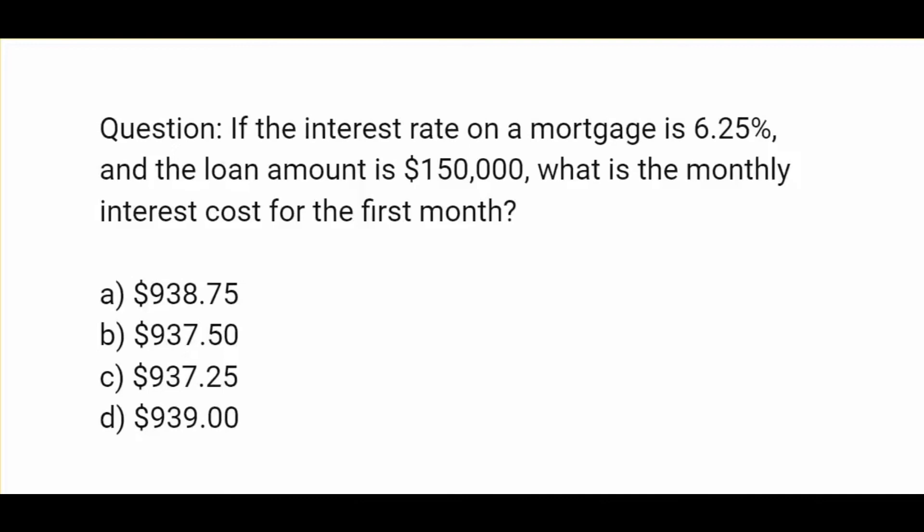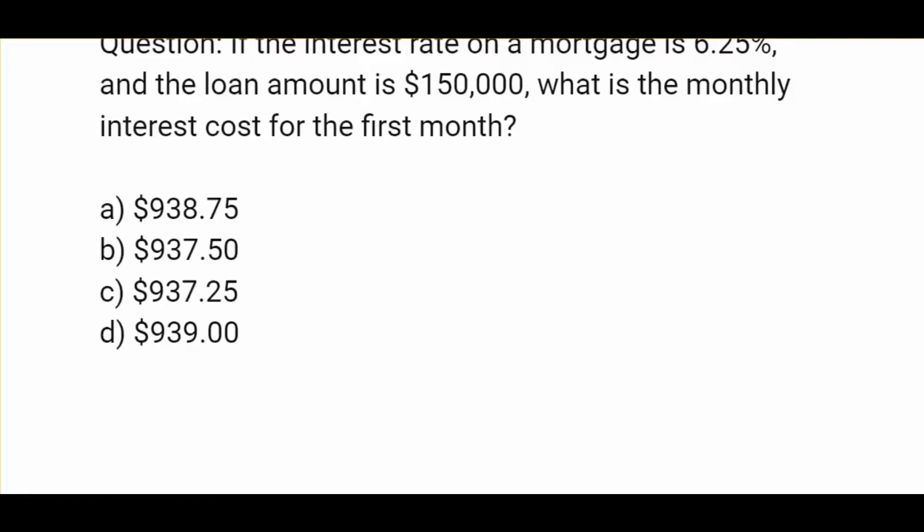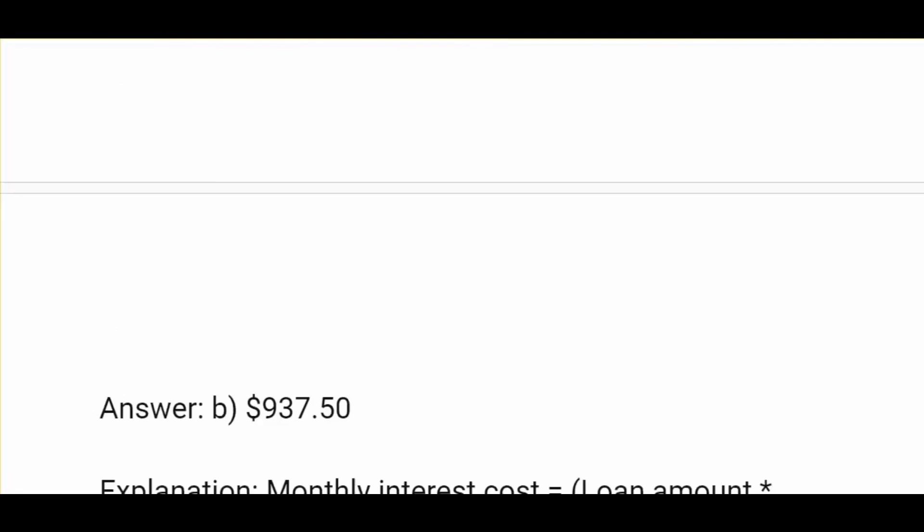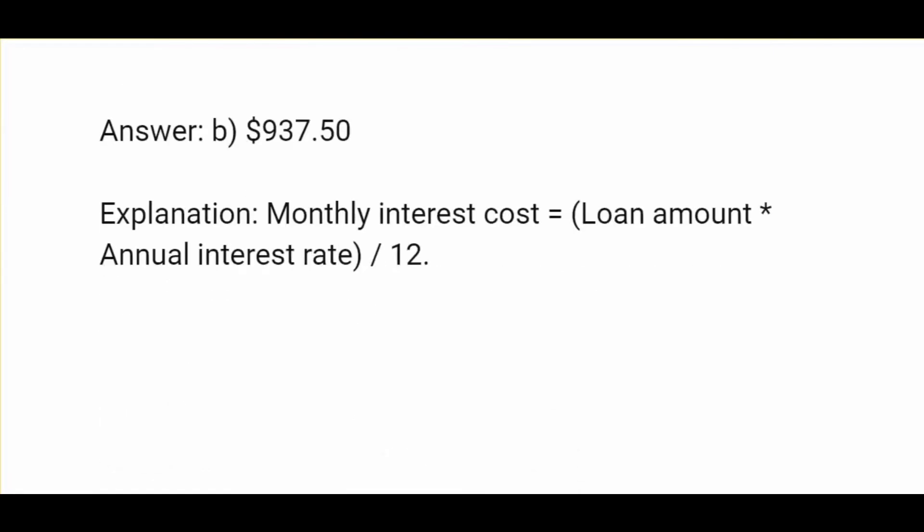If the interest rate on a mortgage is 6.25% and the loan amount is $150,000, what is the monthly interest cost for the first month? Options are $938.75, $937.50, $937.25, or $939. The answer is $938.75. Monthly interest cost equals loan amount times annual interest rate divided by 12.